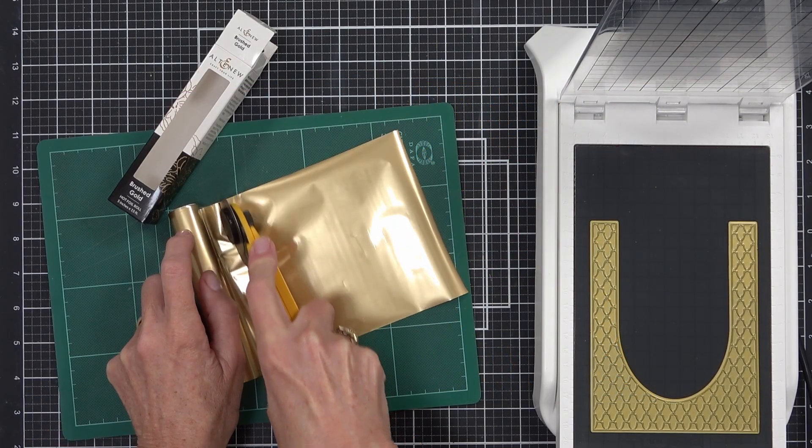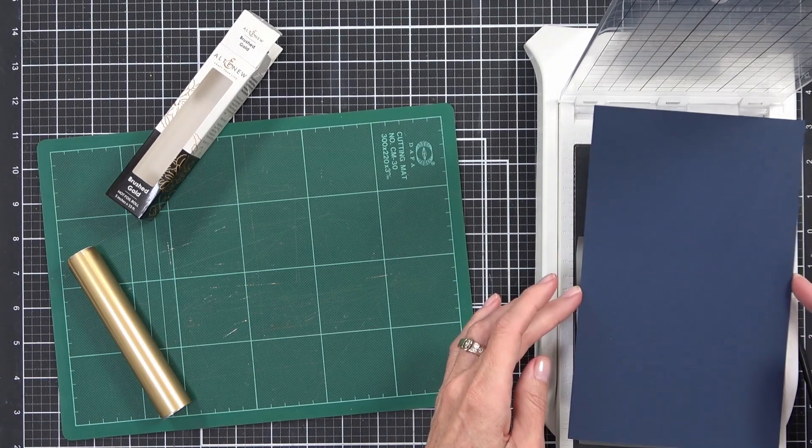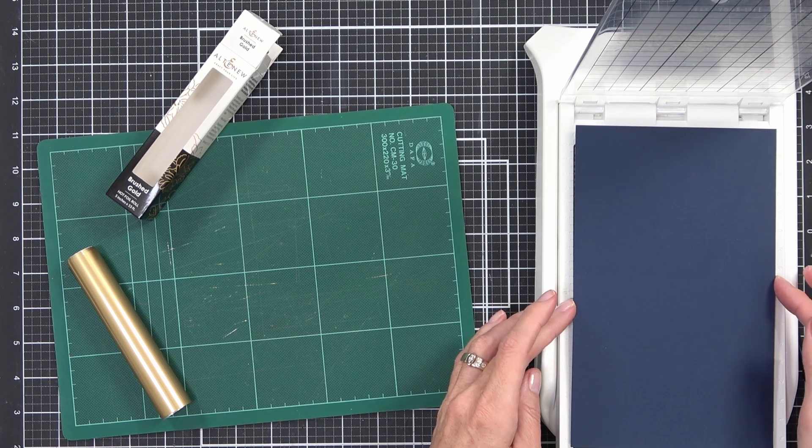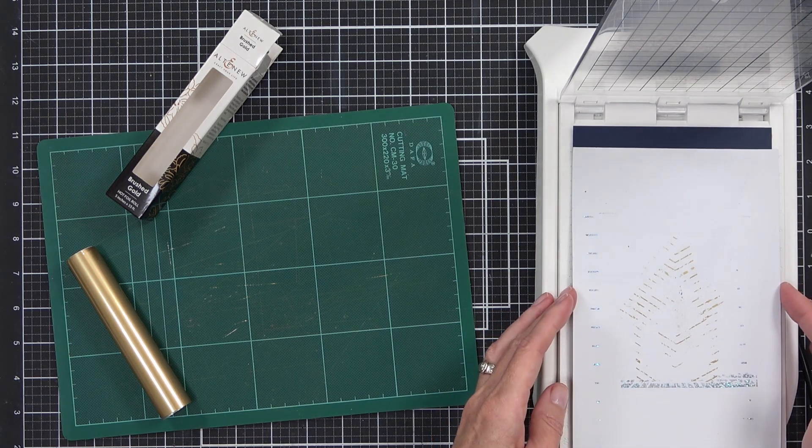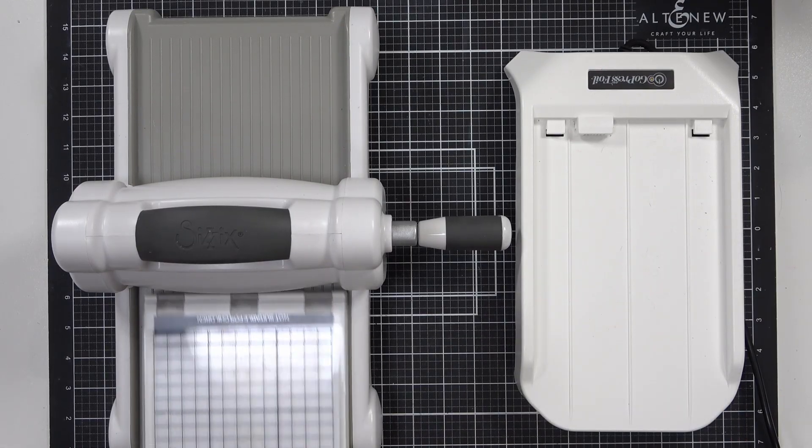I'm going to be creating two backgrounds. This first one I've actually got this arch hot foil plate from Altenew, but I want to make it into a window and that means I want to create two separate pieces.